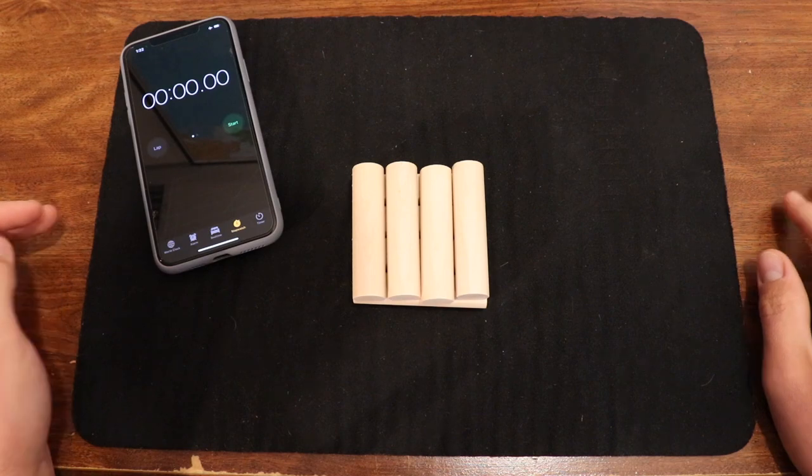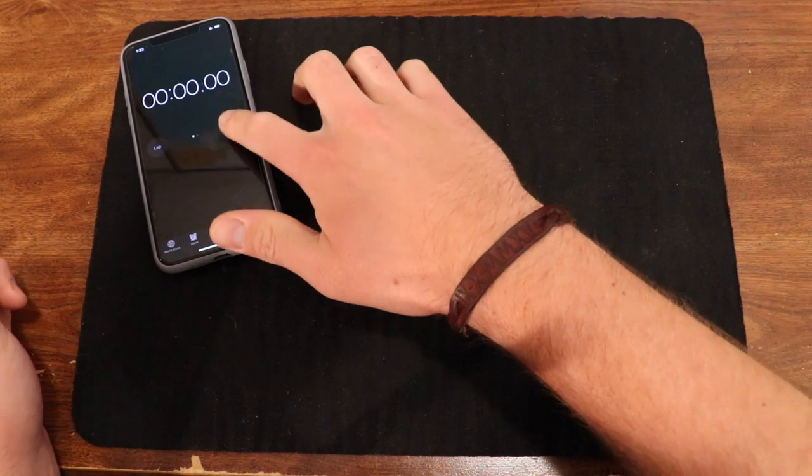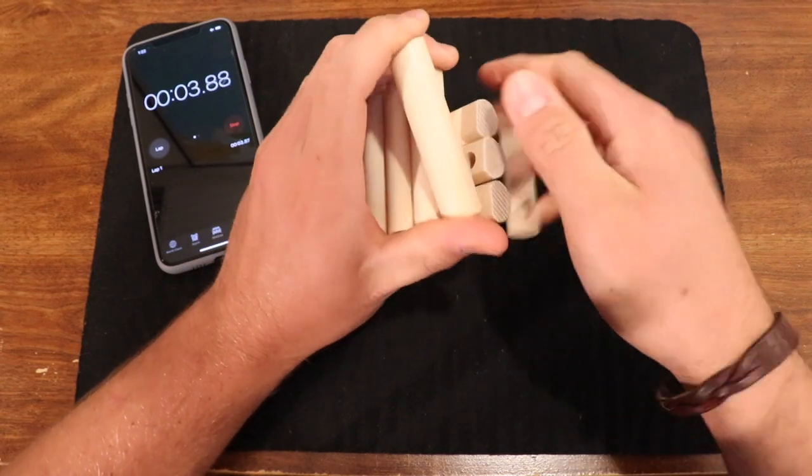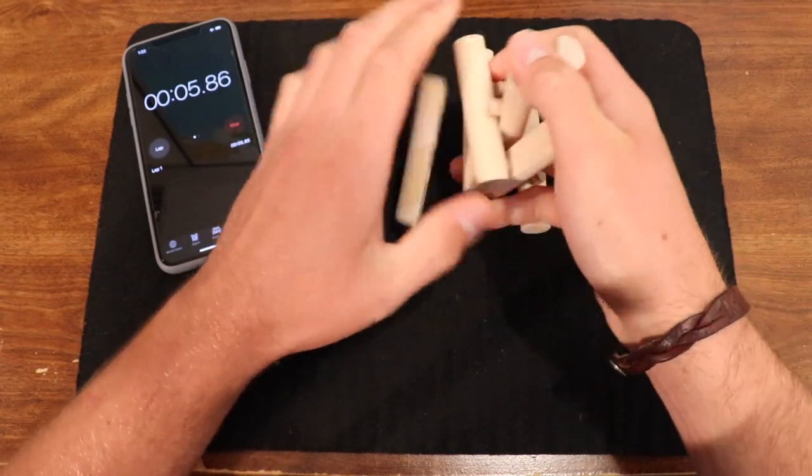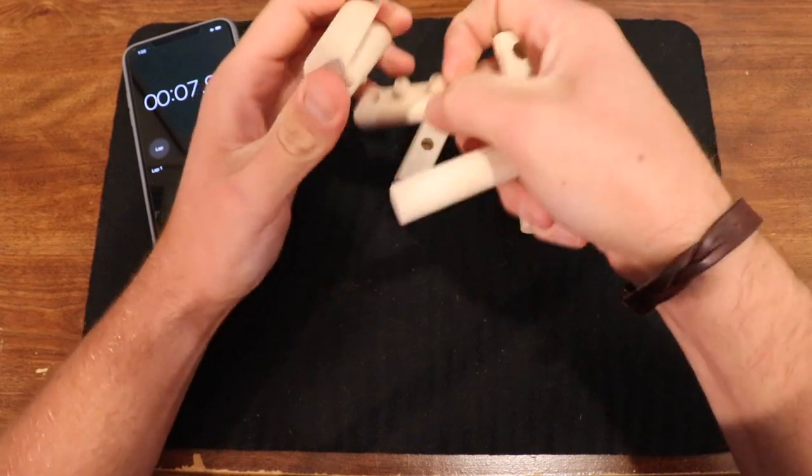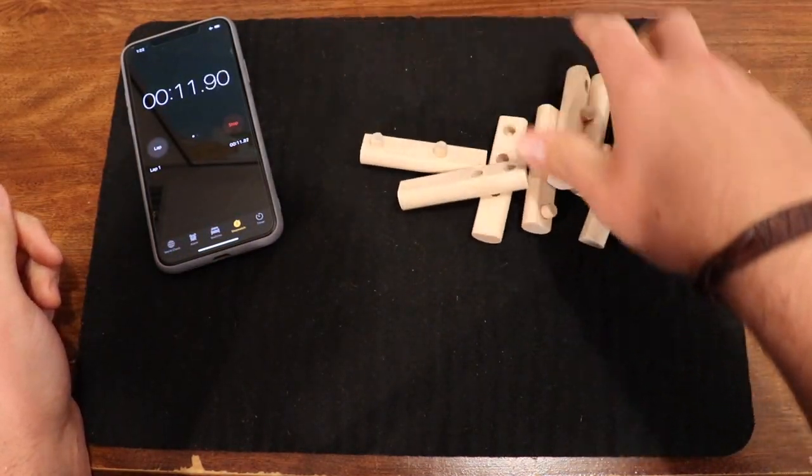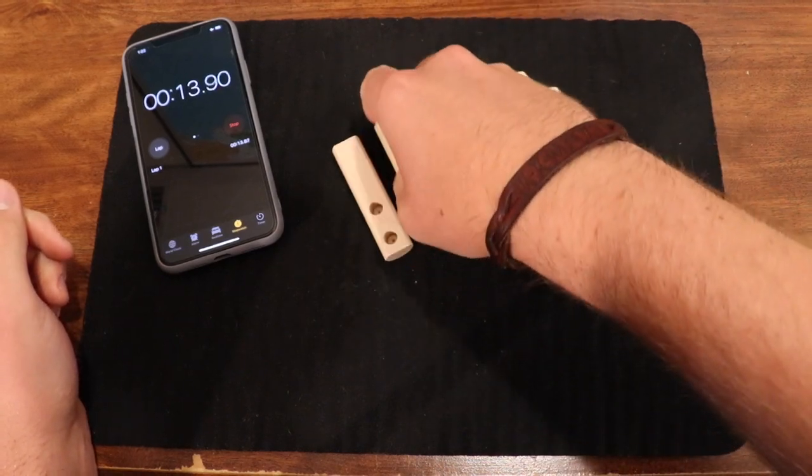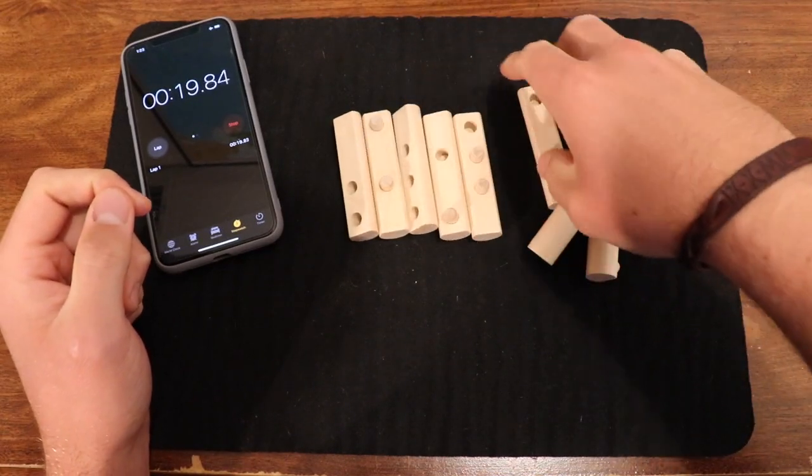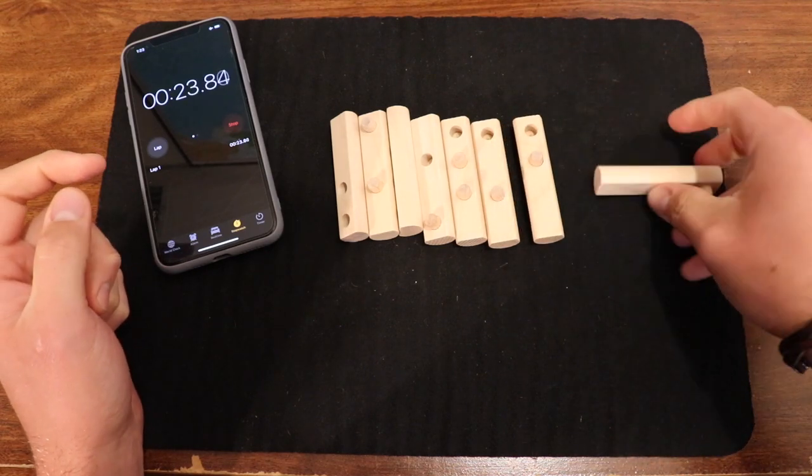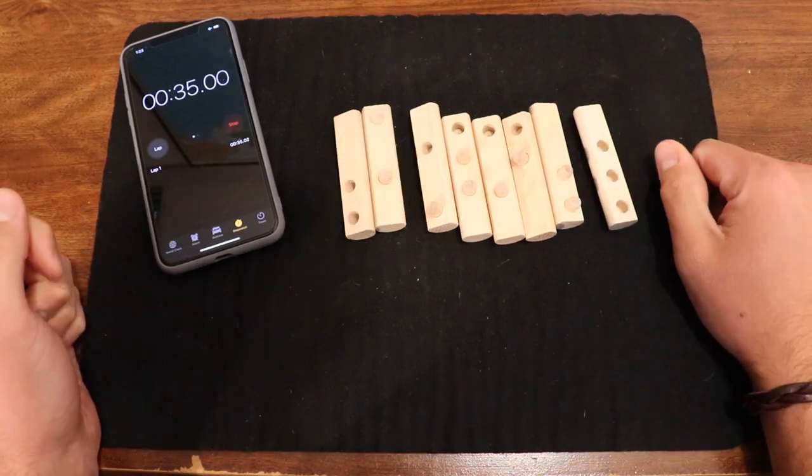Alright quick intro today. Here we go, raft puzzle. Simple. Take it apart and put it back together. So we're going to do that. Take it apart. There we go. We got eight pieces. Some of them have little knobs on them and some of them have little holes in them. Just got to put it together.